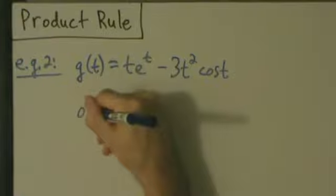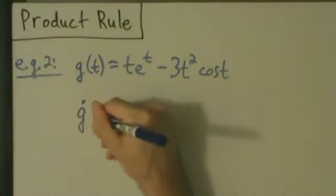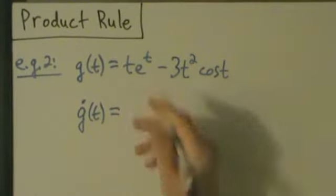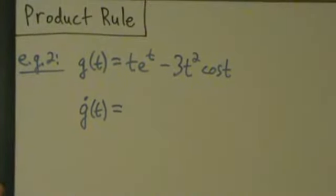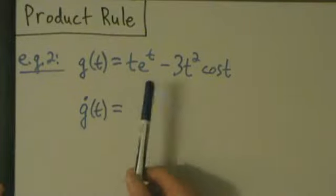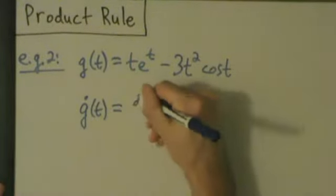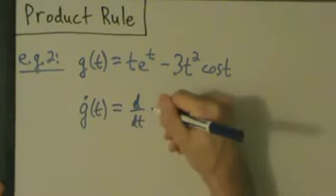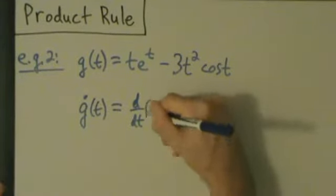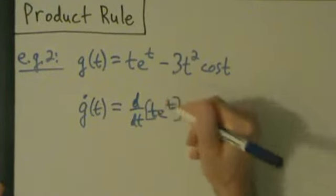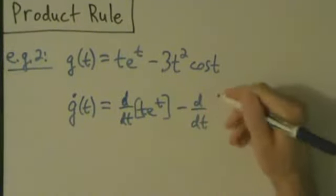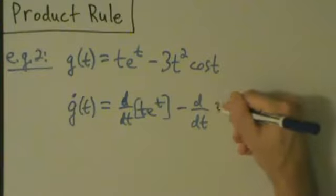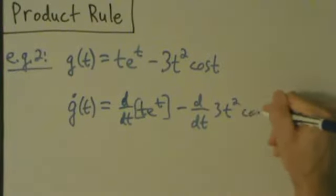We want to find g dot of t — we can just as well say dg dt or g prime of t. We're going to focus on the first term. Let's write it like this: d/dt of t·e^t, and I want to do this in a little more detail because there's a point I want to make. Minus d/dt of 3t squared cosine of t.